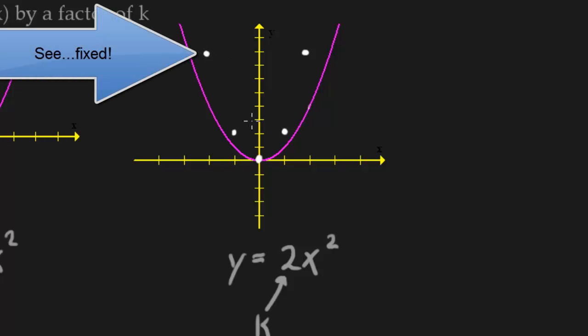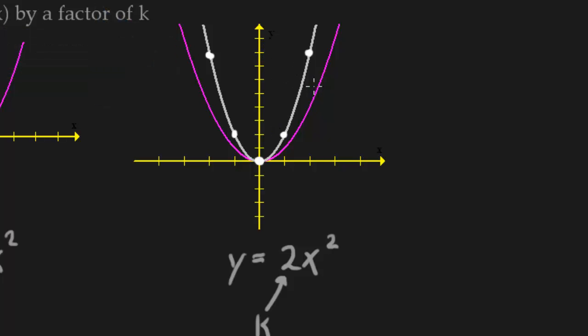All right, so let's connect the dots. Now notice that everything is, it looks like everything is being shifted up. But notice that the shift here is bigger than the shift here. All right, and that's why it's not actually a vertical shift.